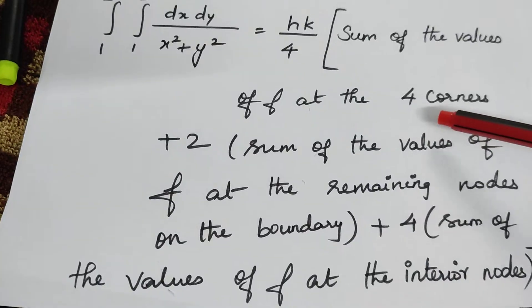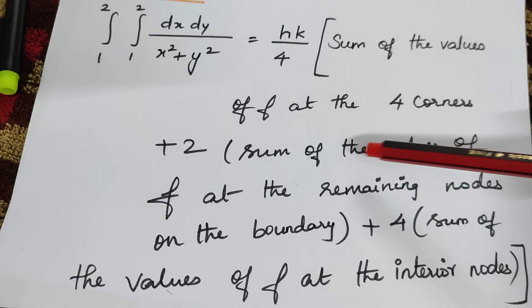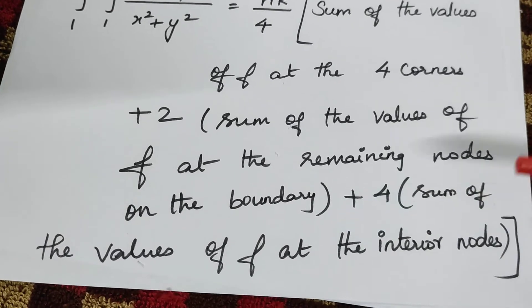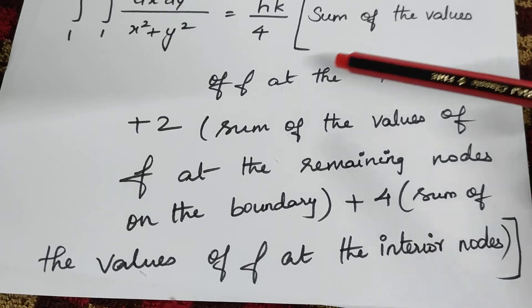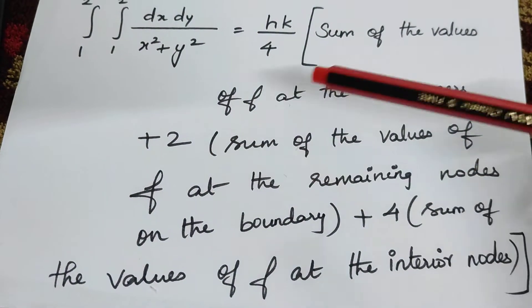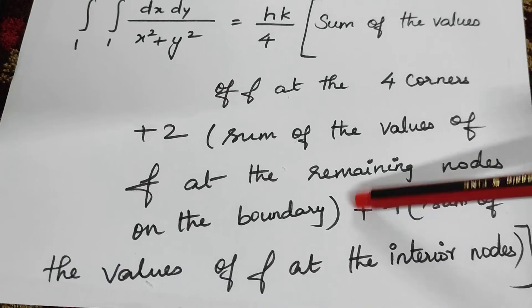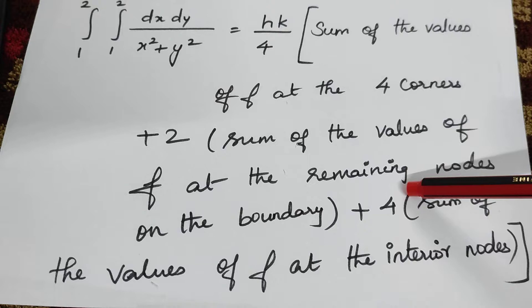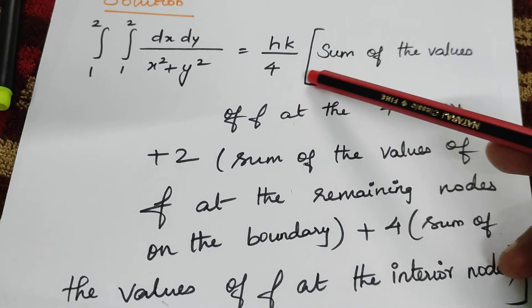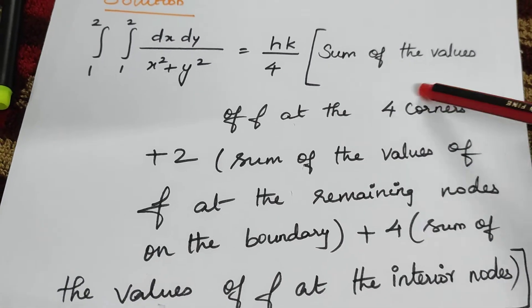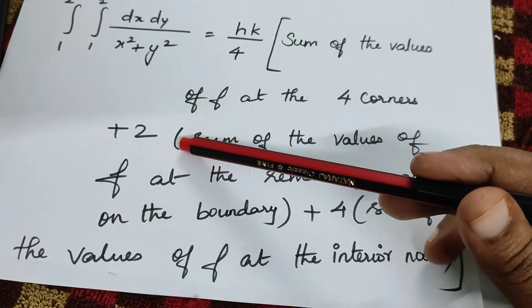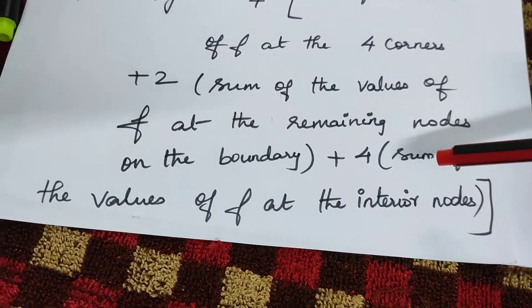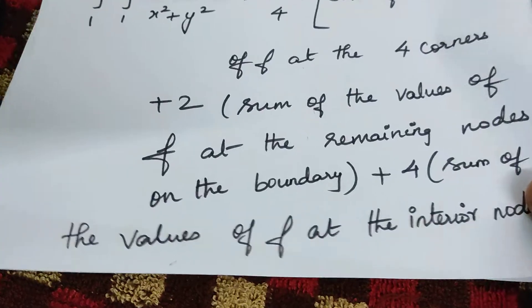The formula goes like this: sum of the values of f at the 4 corners plus twice the sum of the values of f at the remaining nodes on the boundary plus 4 times the sum of the values of f at the interior nodes. This is the formula.